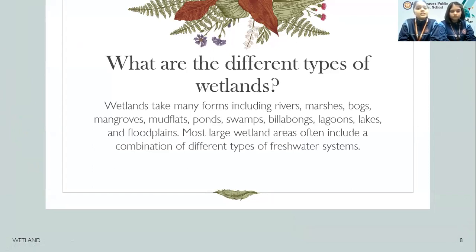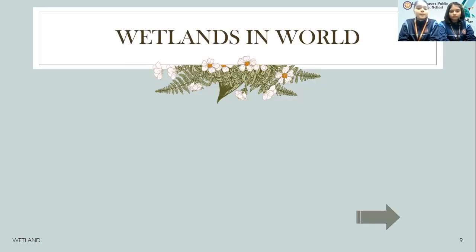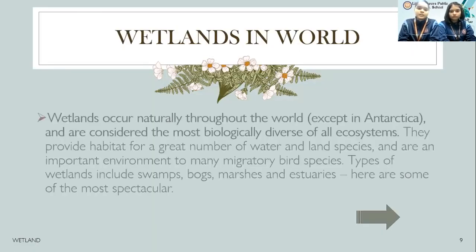Wetlands take many forms including rivers, marshes, bogs, mangroves, mudflats, ponds, swamps, billabongs, lagoons, lakes and floodplains. Most large wetland areas often include a combination of different types of freshwater systems.